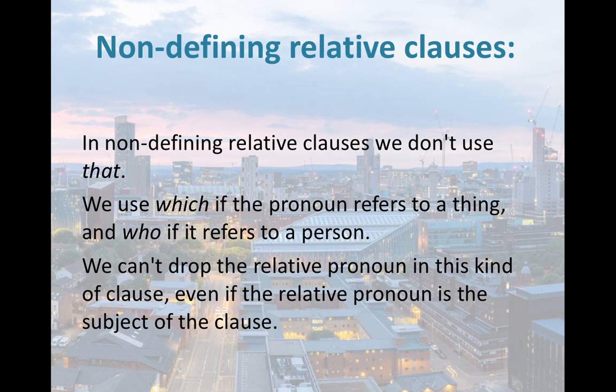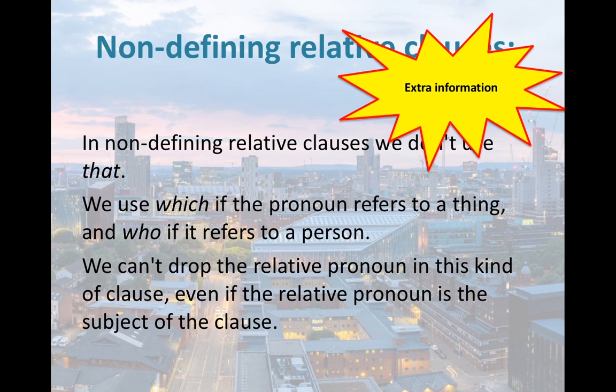Some characteristics of non-defining relative clauses: we don't use 'that.' In defining relative clauses you can use who or that for people, and which or that for things. But in non-defining relative clauses we only use which or who — we do not use that. We use which if the pronoun refers to a thing and who if it refers to a person. Also, in non-defining relative clauses we can't drop the relative pronoun, and the information is always extra.